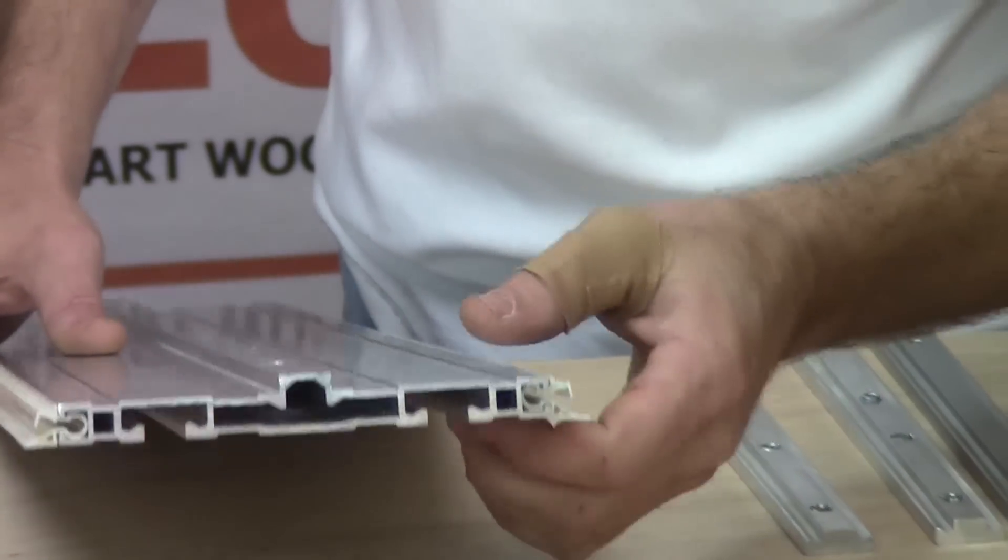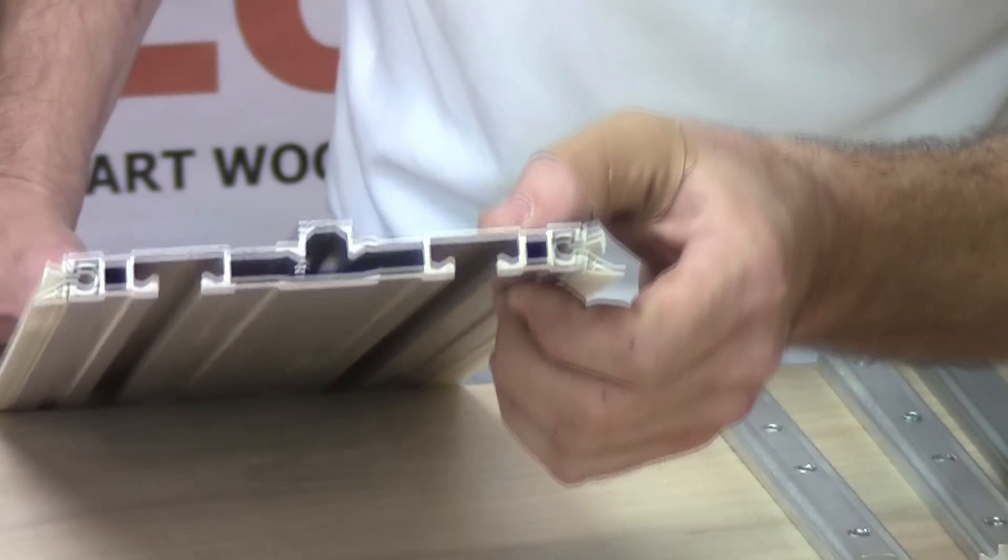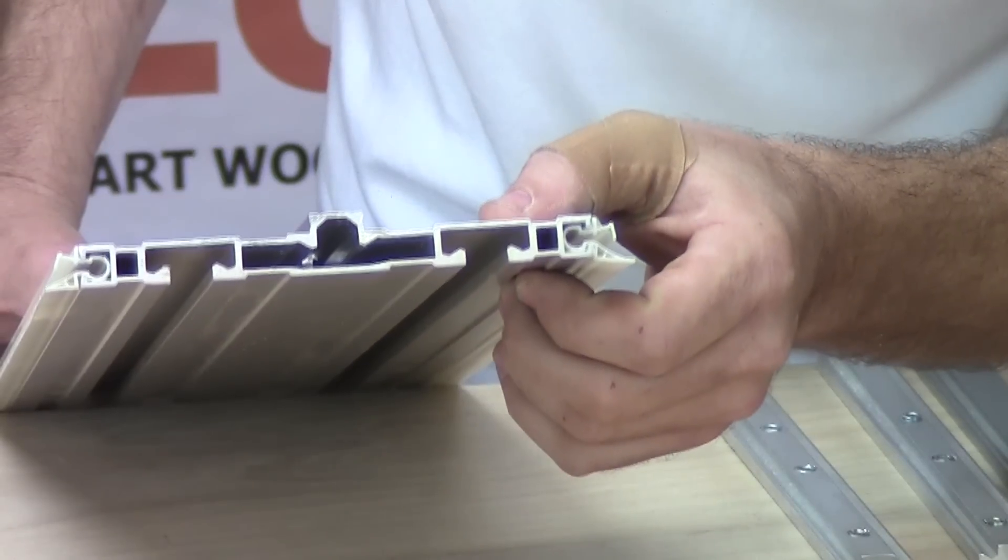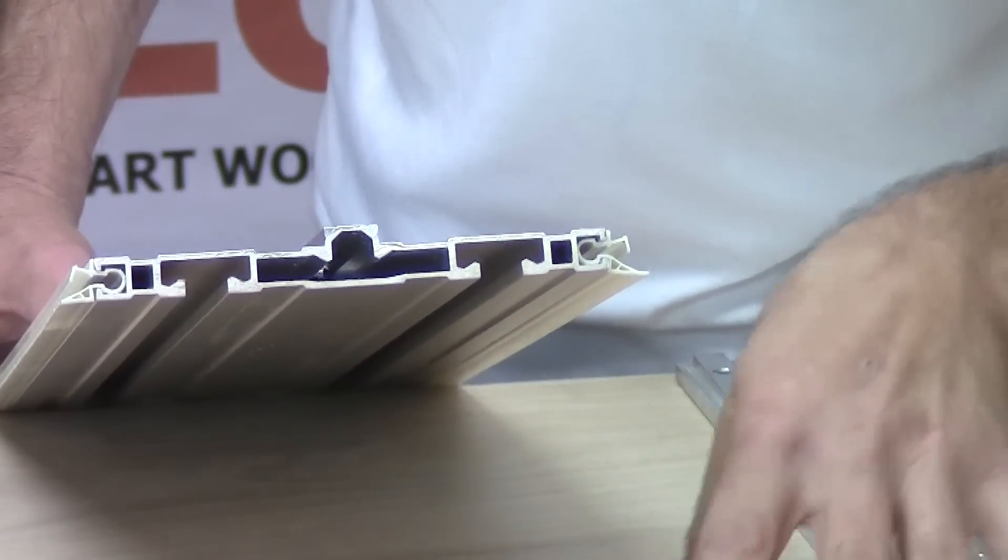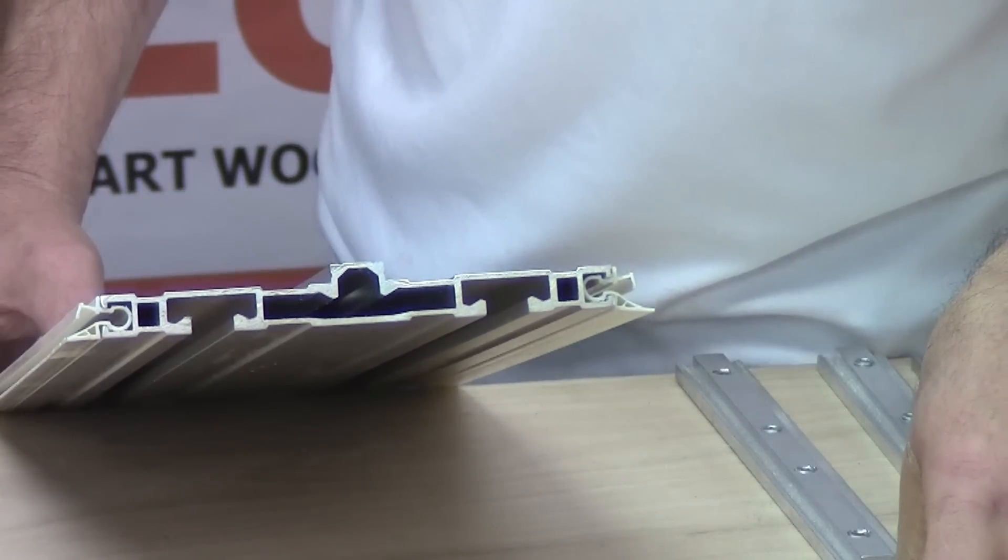The EZ Smart Track Saw Systems are made in the USA. Unlike similar systems, the EZ Smart Guide Rail is made up of industrial strength aluminum and the solid box core construction is designed for a lifetime of use.